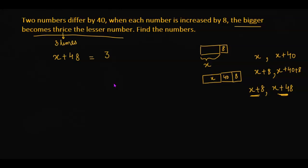Three times the lesser number, which is x plus 8. So now we can solve this equation: x plus 48, and here we can distribute the number 3 and see what we get: 3x plus 24.